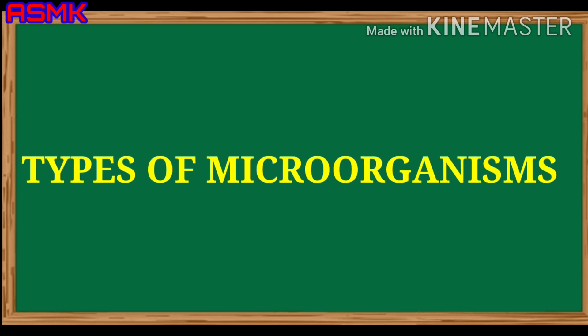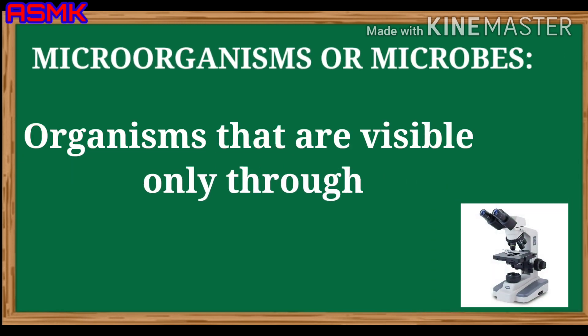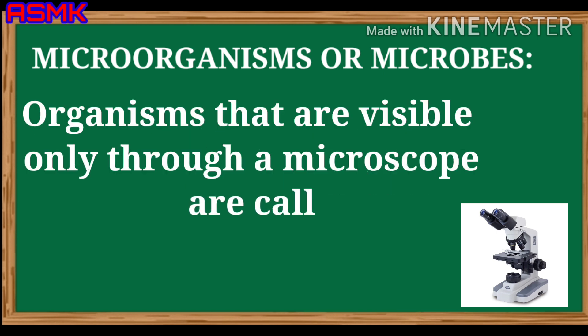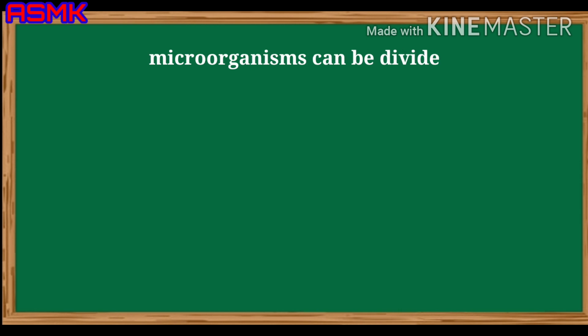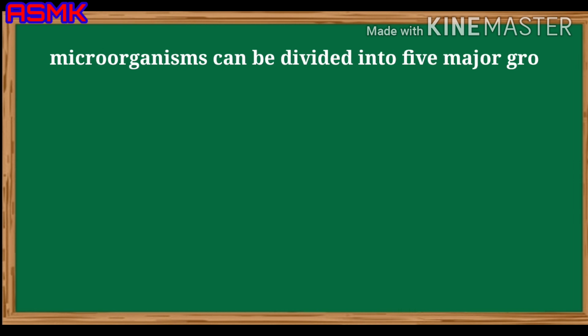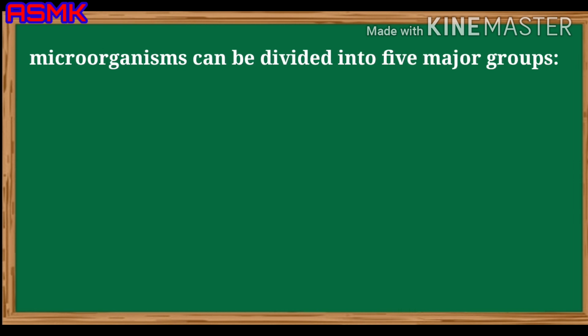Types of microorganisms. Organisms that are visible only through a microscope are called microorganisms. Micro means very small. Microorganisms can be divided into five major groups.